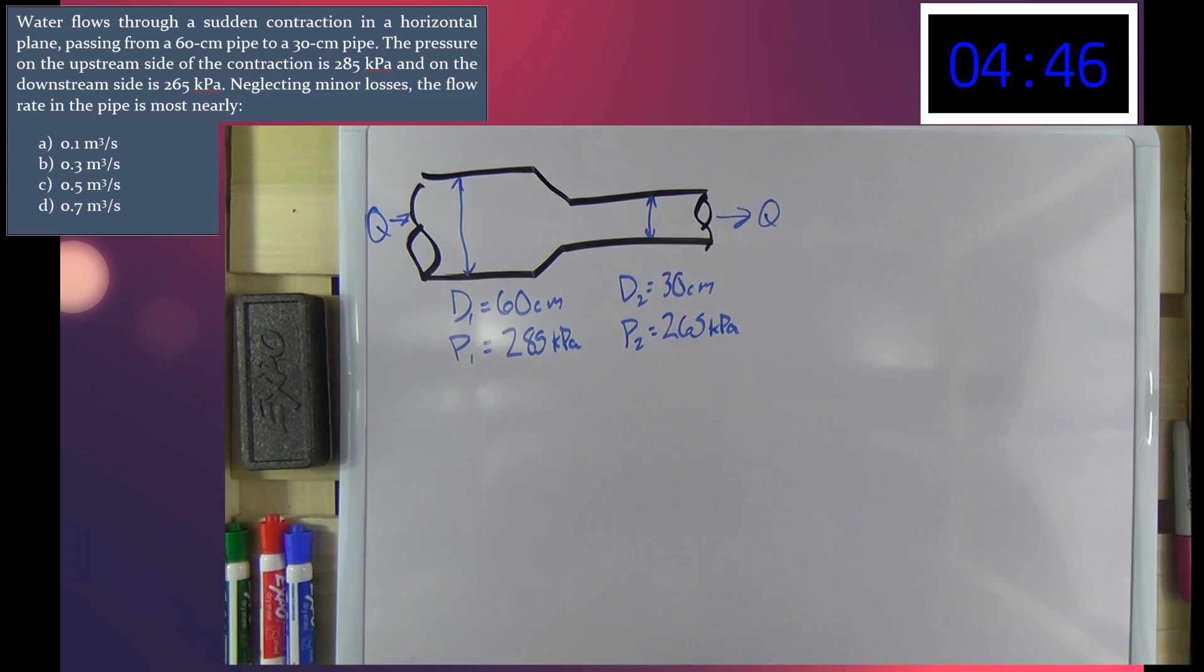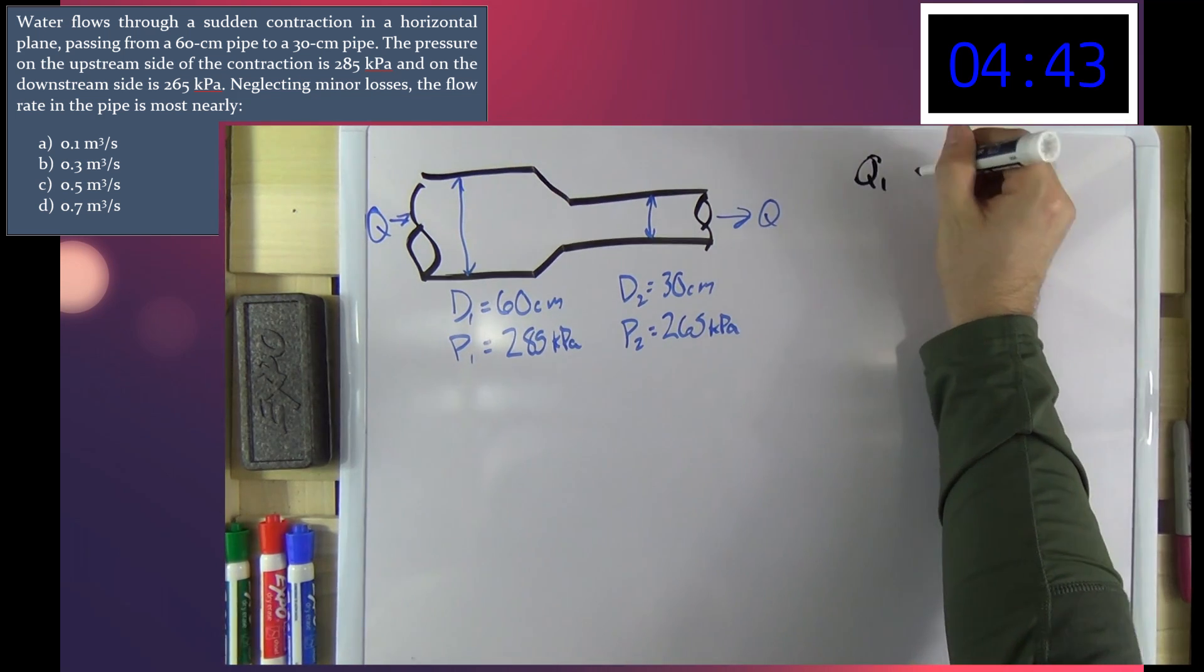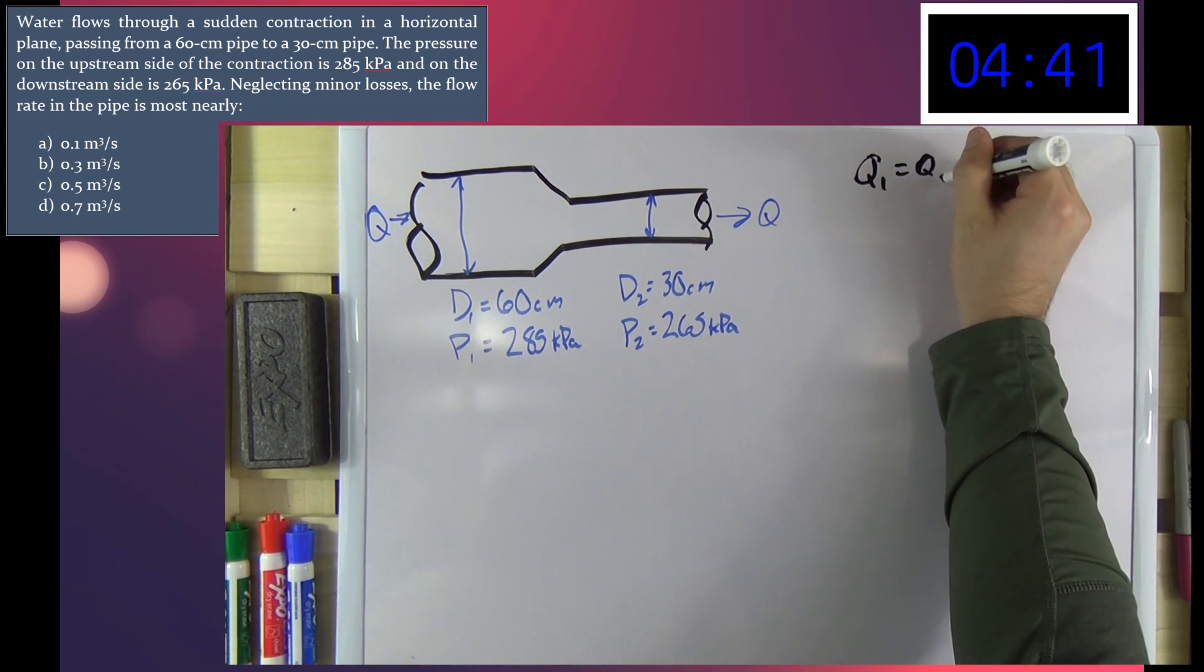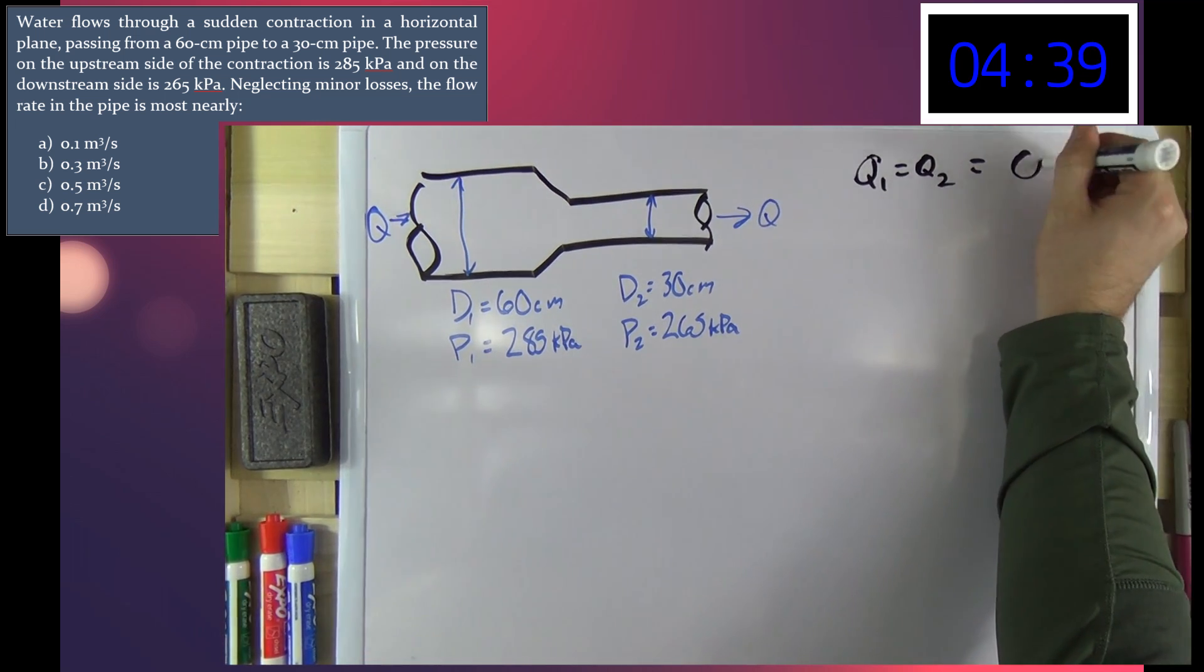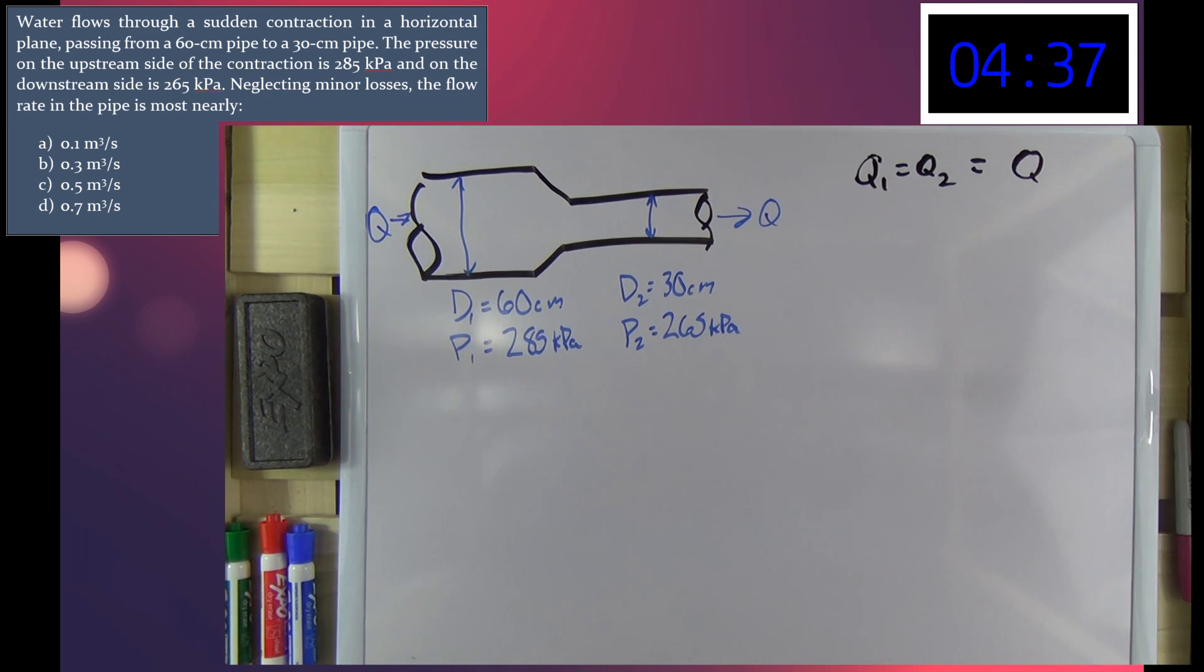Alright, we know from the continuity equation that Q1 is going to be equal to Q2, which we will refer to both as just Q, which is what we're ultimately trying to solve for here.